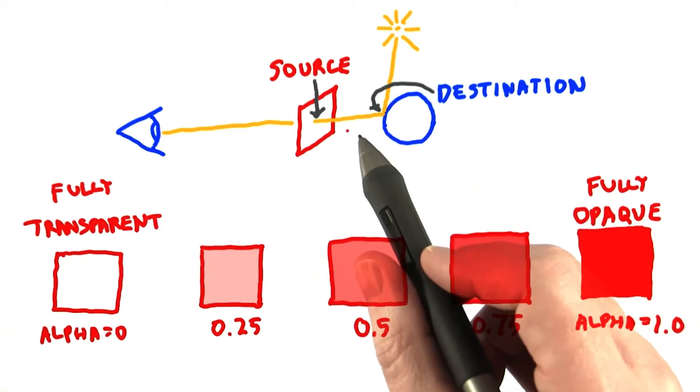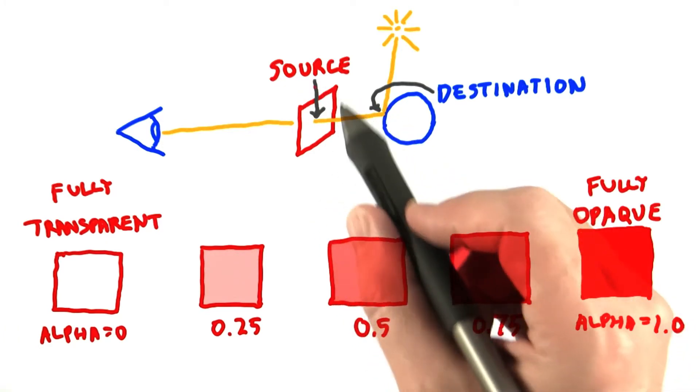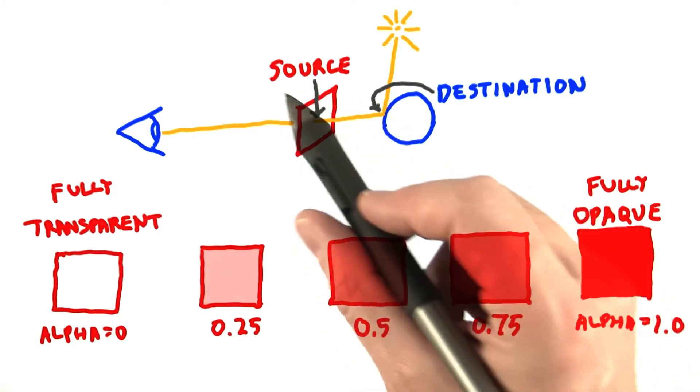In blending in computer graphics, the original color is called the destination, and the color of the transparent object we're looking through is called the source color.